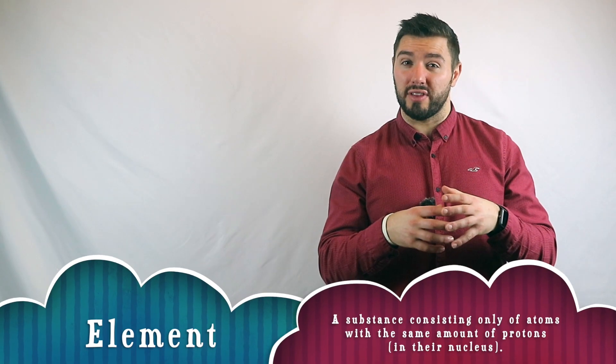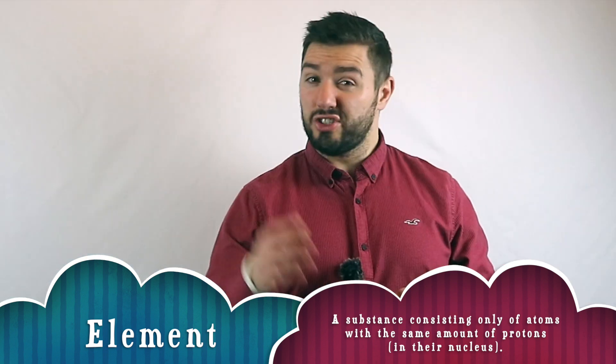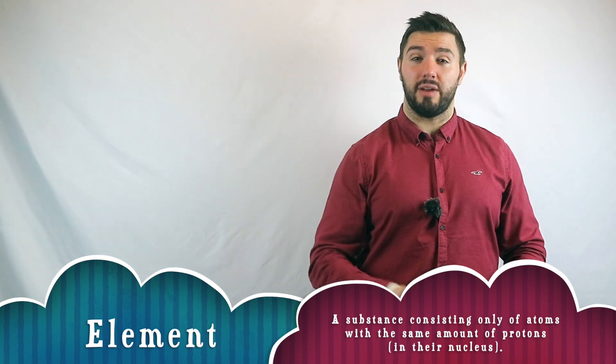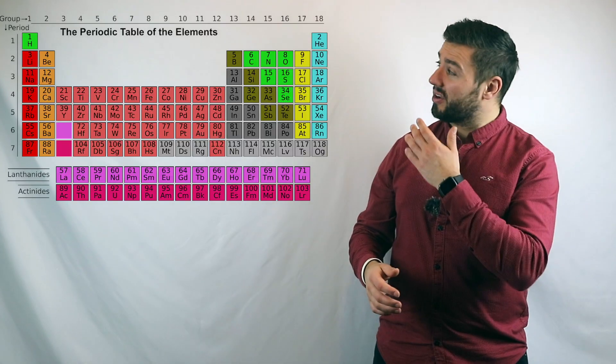If we get a collection of the same type of atom together, we'll call that an element. It's just one type of atom. Currently, we know there's 118 different types of elements. And we've put them into this beautiful thing called a periodic table.